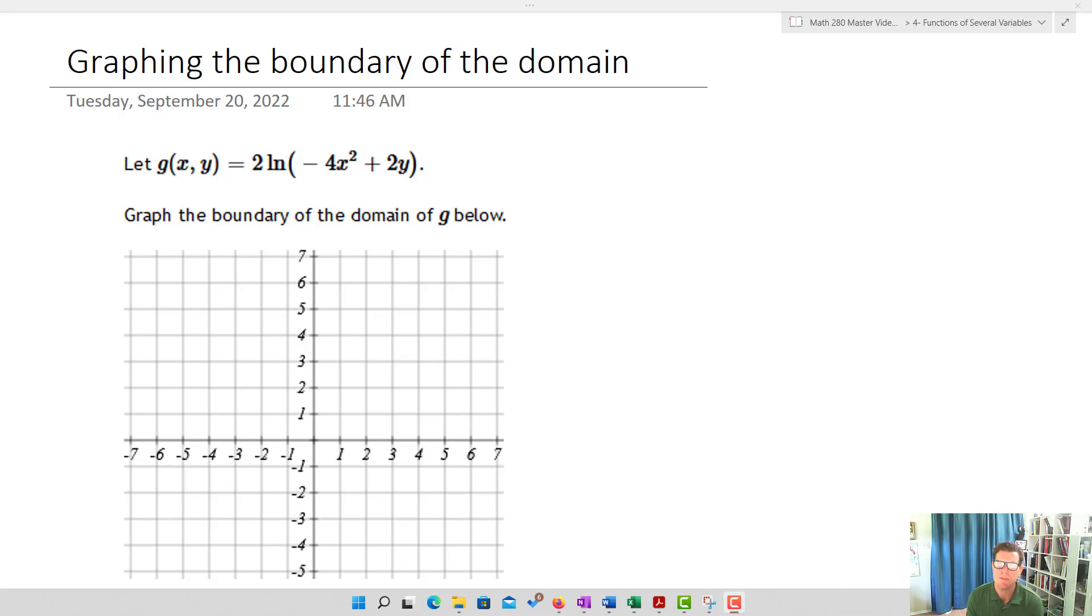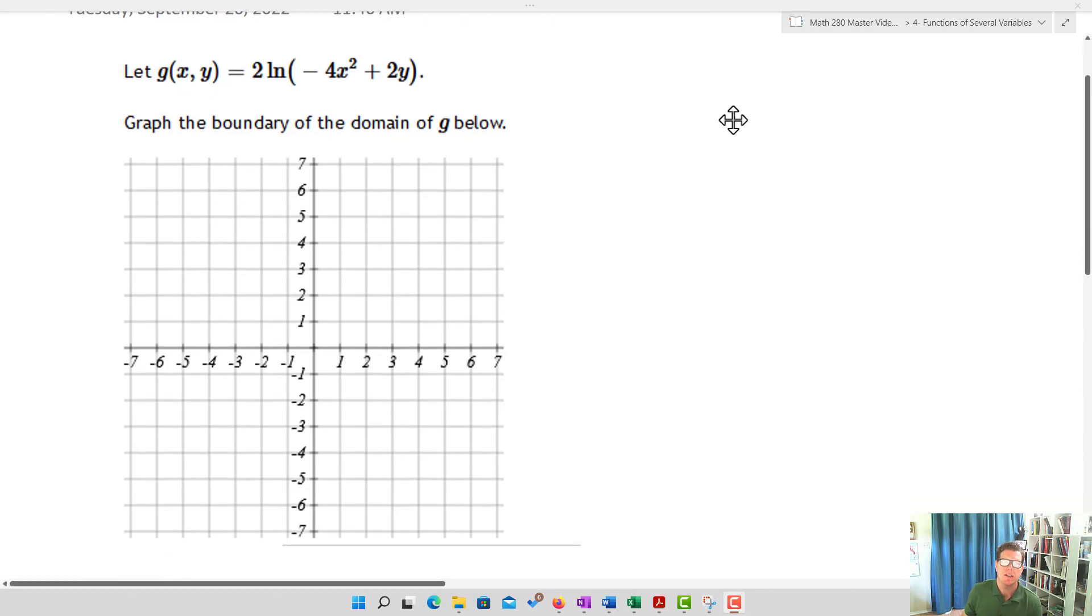Okay, so this short video is about graphing the boundary of a domain, and what we're looking to do here is apply some of the things that we got from functions of several variables. Let's suppose that I have this function: g(x, y) equals 2 times the natural log of negative 4x squared plus 2y.